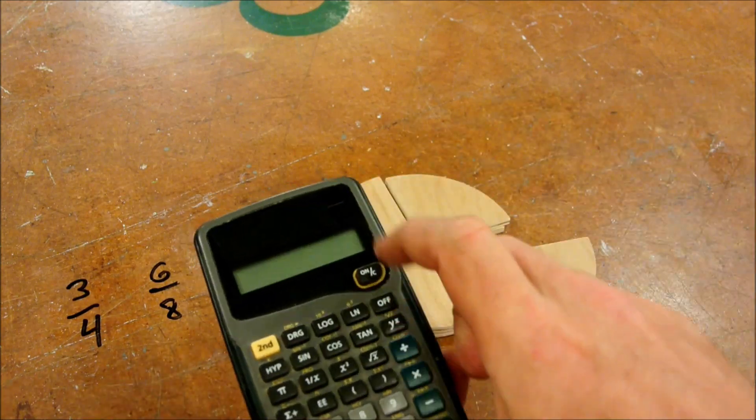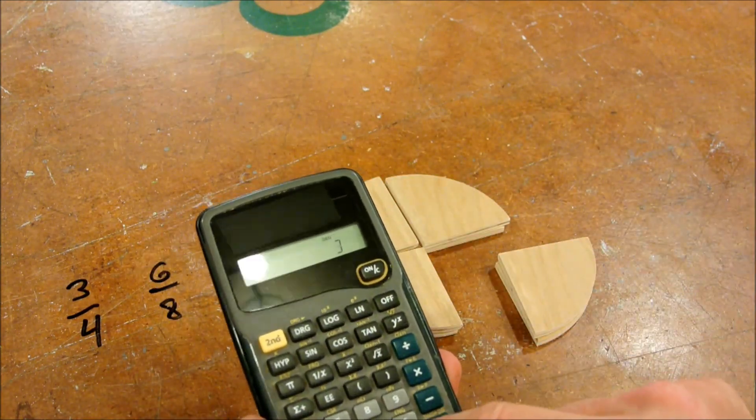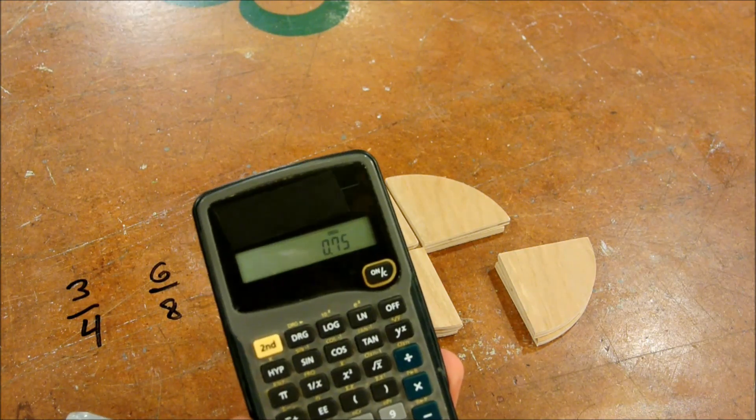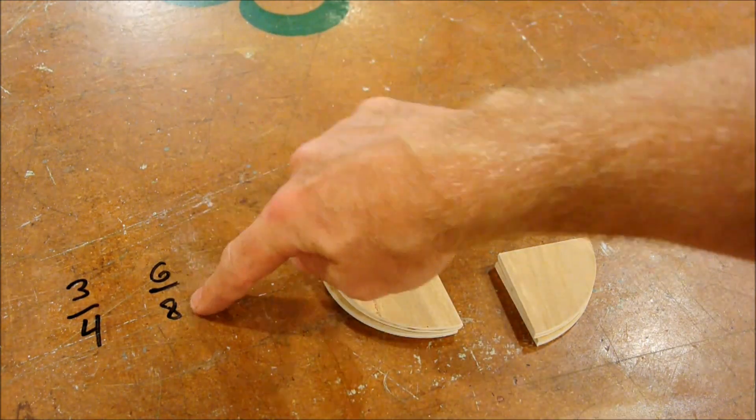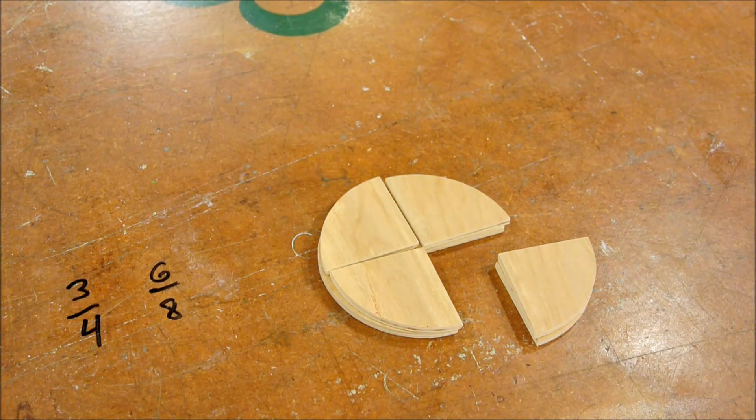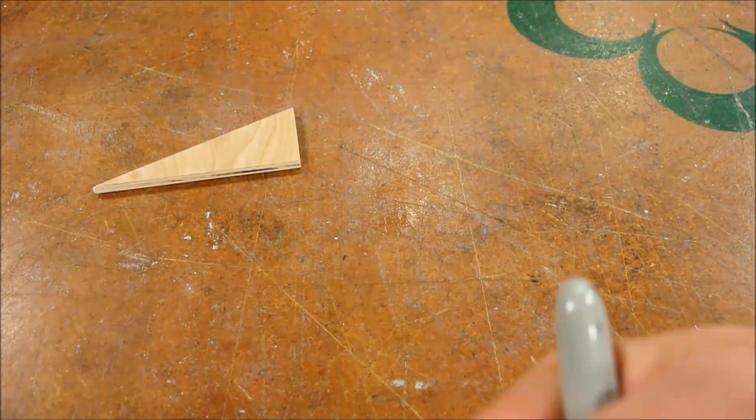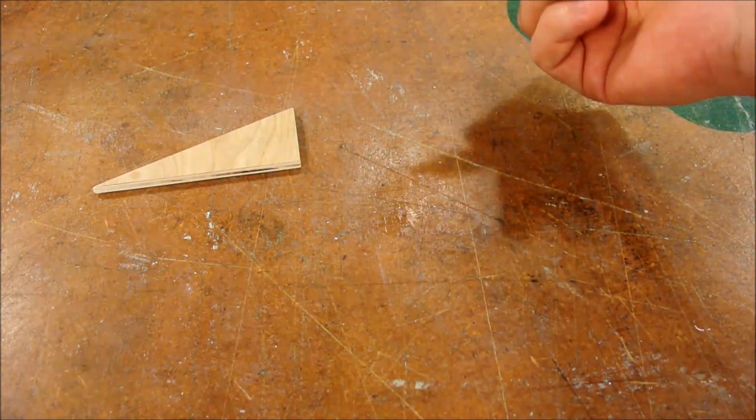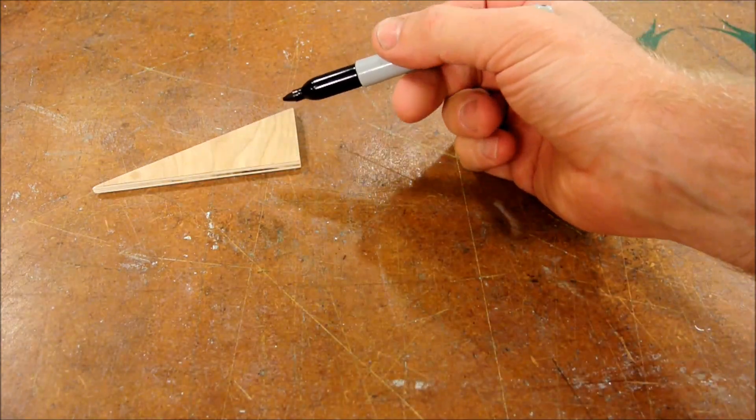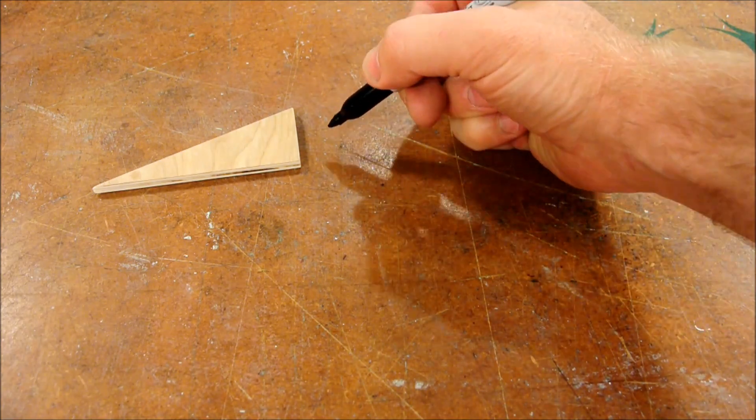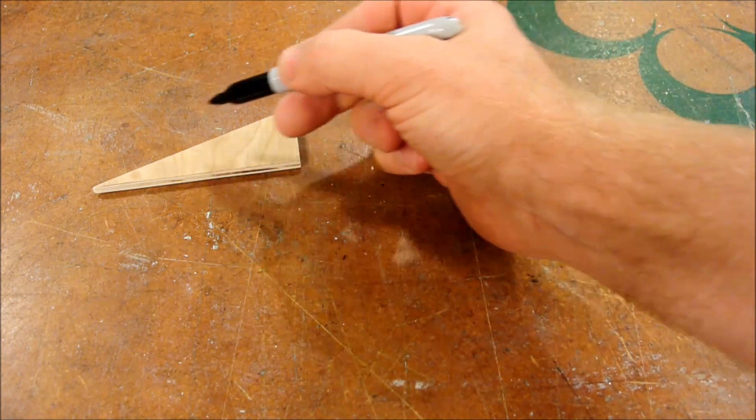And a calculator can show us that. 3 divided by 4 is, you guessed it, 0.75. And if you do the same thing with 6 divided by 8, it will also be the same. A mathematical expression is really meaningless without us to apply meaning to it. So, in the case of our ratio 3 quarters, or 3 fourths, we can also think of it as a triangle.